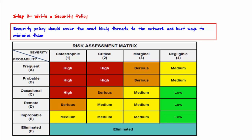A risk assessment will often give a dollar amount that it would cost the company should a particular risk be realized, which is multiplied by the number of times that risk is likely to be realized per year. So if a particular risk is estimated to cost two thousand dollars each time it occurs and it's likely to occur three times per year, then the cost for that risk is six thousand dollars on a yearly basis.